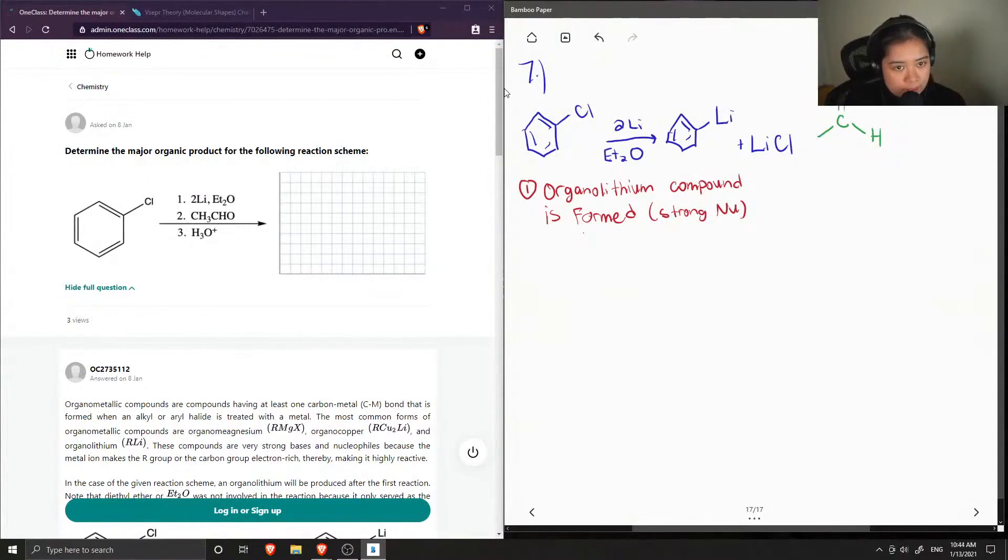This is the structure of our second reagent. And then I can show how this nucleophile can come in and attack the carbonyl group, bringing the negative charge onto the oxygen.